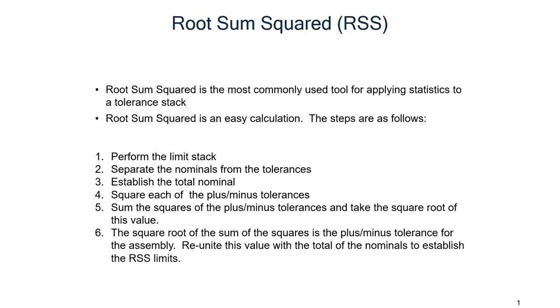We will start with how to use it. The steps for doing RSS are: perform the limit stack, separate the nominals from the tolerances, establish the total nominal, square each of the plus-minus tolerances, sum the squares of the plus-minus tolerances and take the square root of this value.